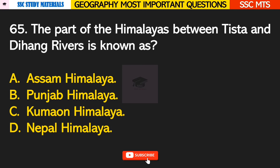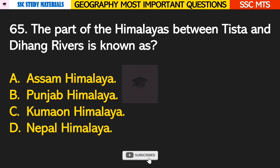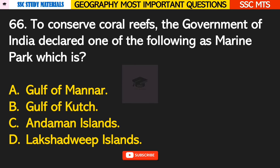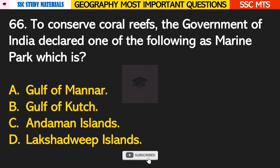Question number 65: the part of the Himalayas between the Tista and Dehang rivers is known as? Answer A — it is known as Assam Himalaya. Question number 66: to conserve coral reefs, the government of India declared which of the following as a Marine Park? Answer B — Gulf of Kutch.